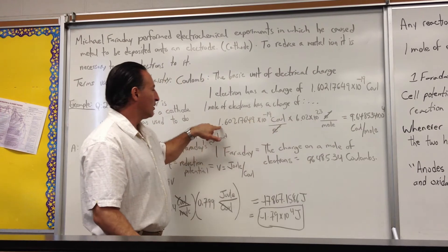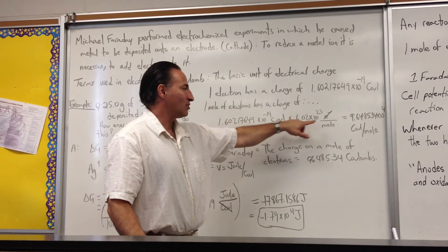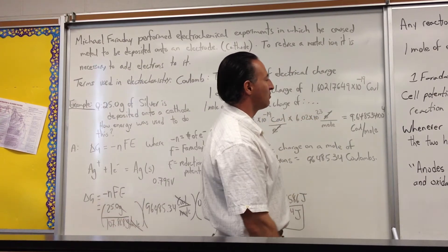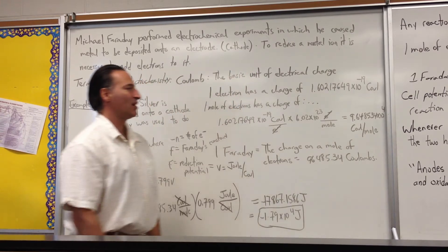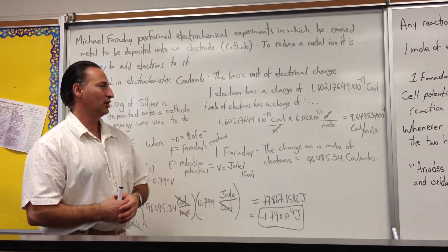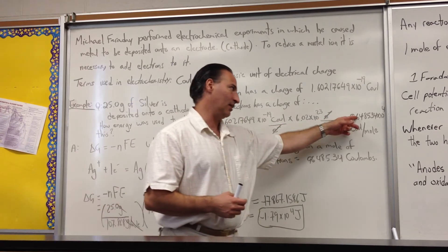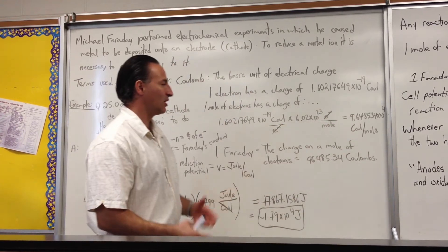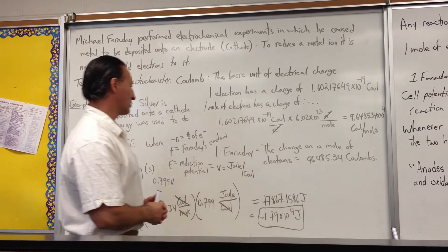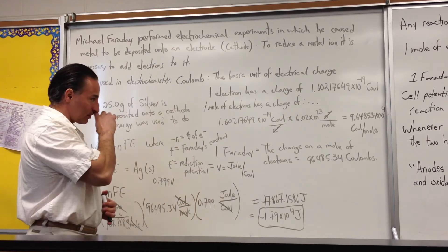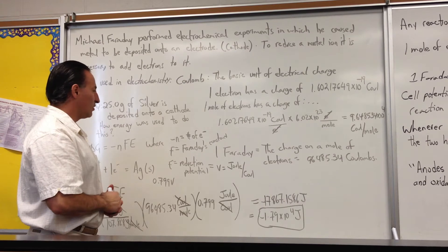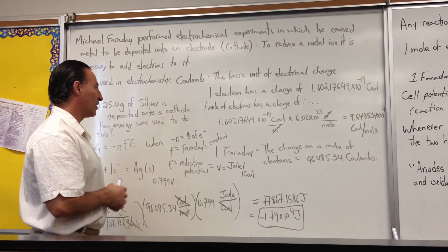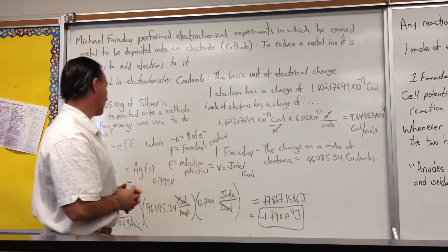If you multiply the charge on each electron with the number of electrons, you get 96,485. That is the charge on one mole of electrons, called the Faraday, with units of Coulombs per mole. So a mole of electrons has this charge of 96,000 Coulombs, and that unit itself is called the Faraday, in honor of Michael Faraday who did these electrostatic experiments.